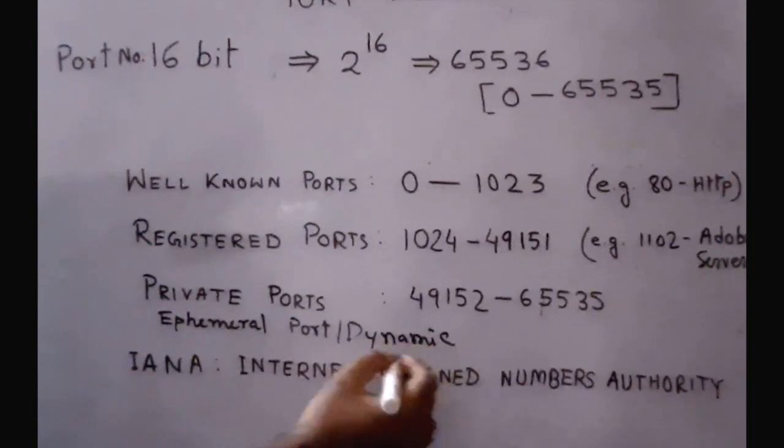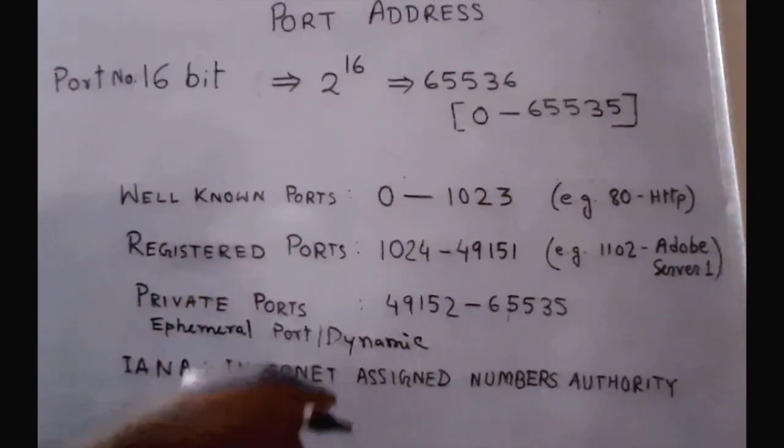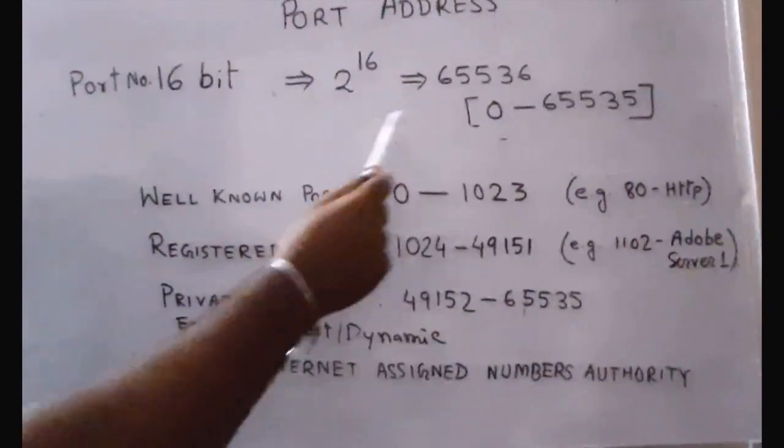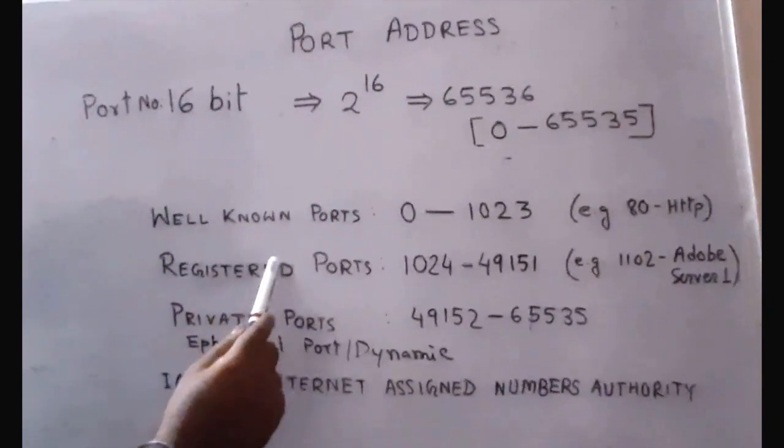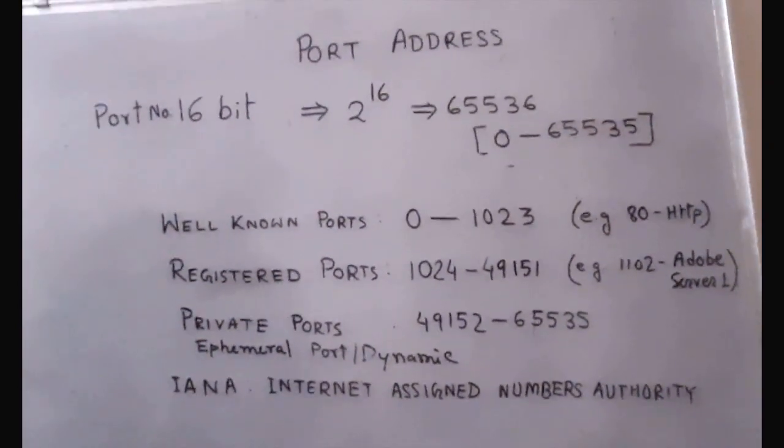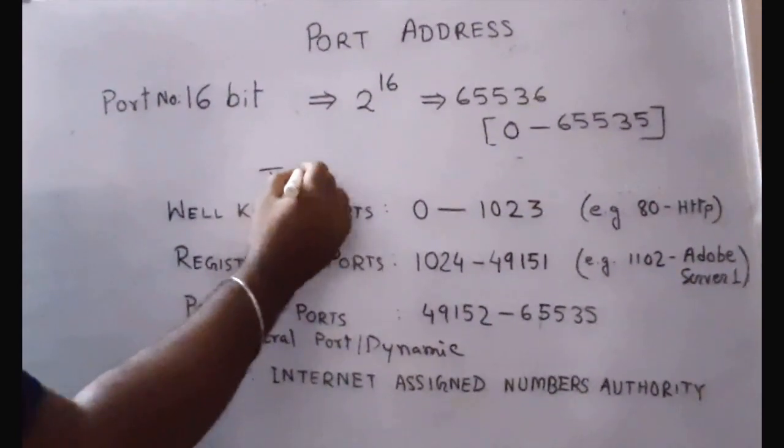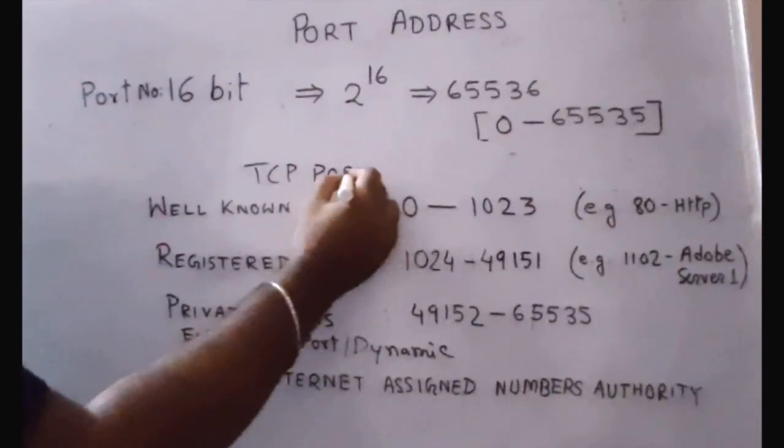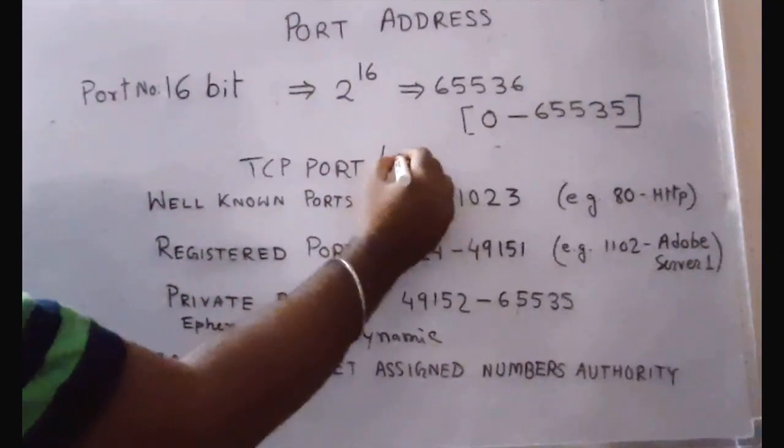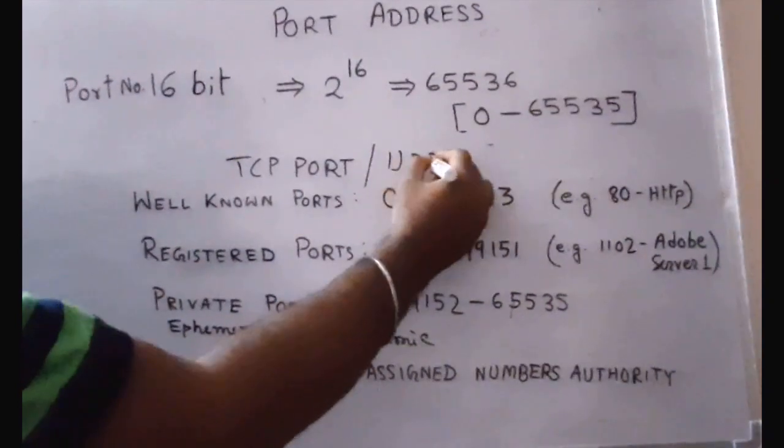Because after using, they can use these ports for different purposes. So all ports are classified into well-known ports, registered ports, and private ports. When TCP uses these ports, we say this is called a TCP port. When UDP uses these ports, we say this is a UDP port.